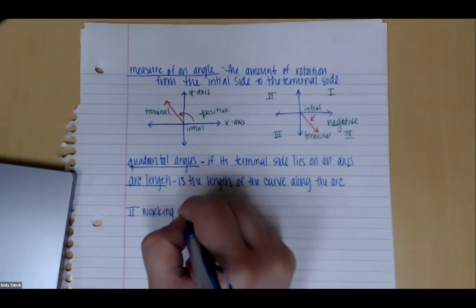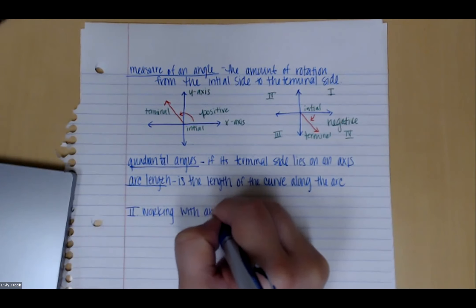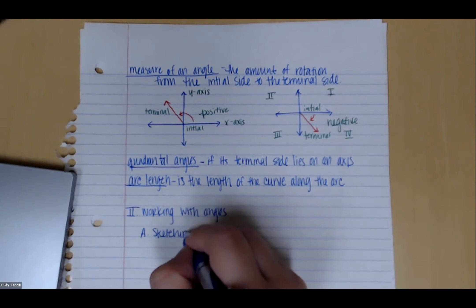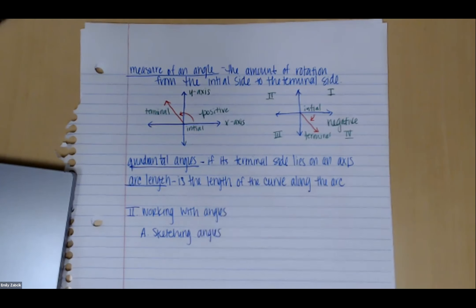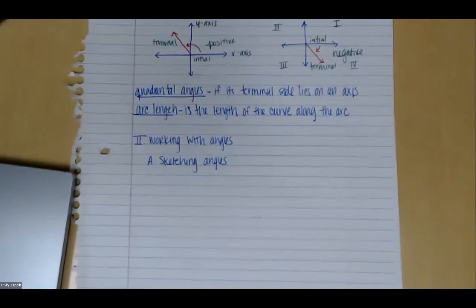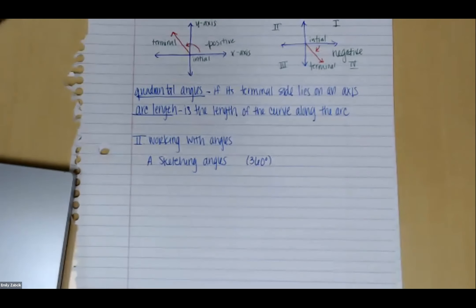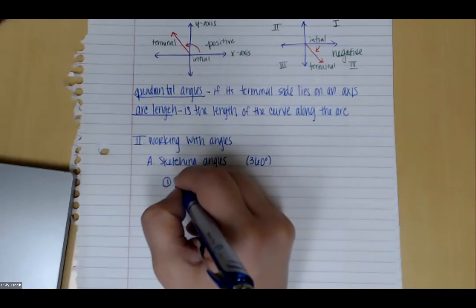Part two — let's look at working with angles. We're going to start with sketching. We'll be doing lots of drawing in this class. Now, if we look at a complete circle, a whole circle is 360 degrees. So all individual angles we draw are a piece of that. Let's look at sketching a 30-degree angle. In this course we'll work with both radians and degrees, and you need to first identify which one you're working with for any given problem.